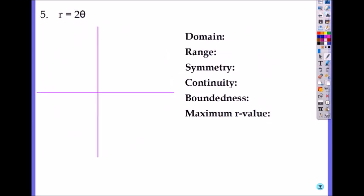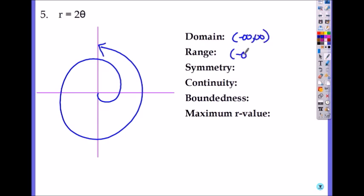r equals 2 theta will be a spiral going faster than 2 theta. So something like this. So domain will be all of your numbers. Range is also all of your numbers. And symmetry, none. Continuous, yes. Is it bounded? No, it goes to negative to positive infinity. So not bounded. And the maximum value of r equals infinity. So there is none. It's not applicable.